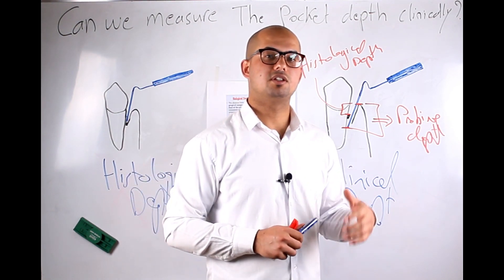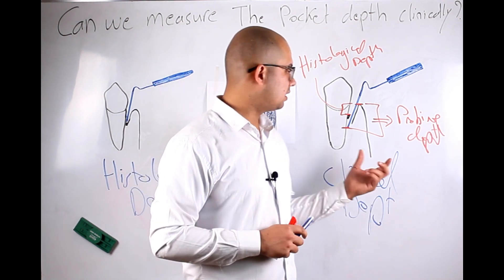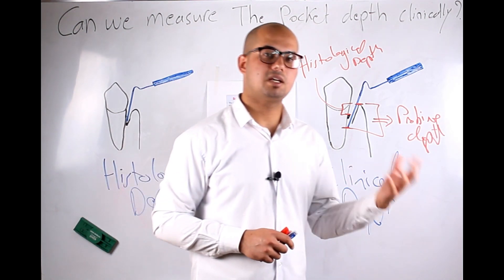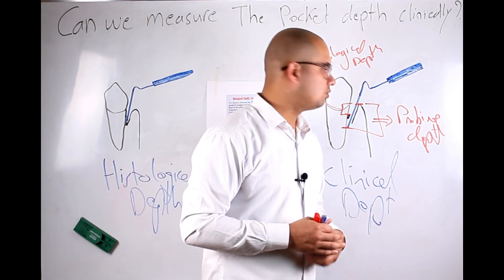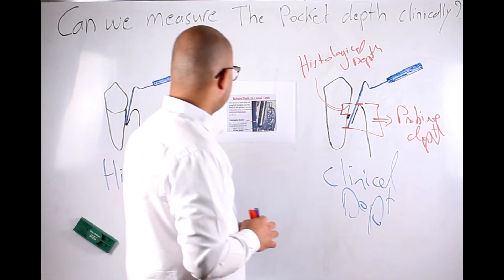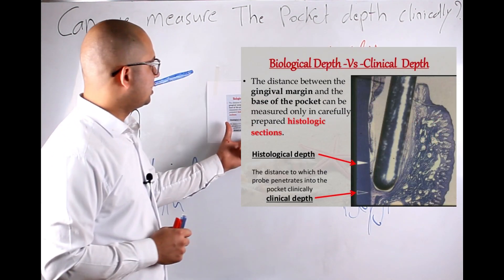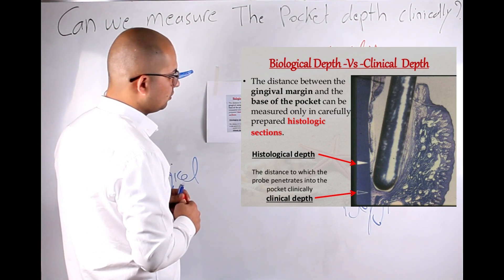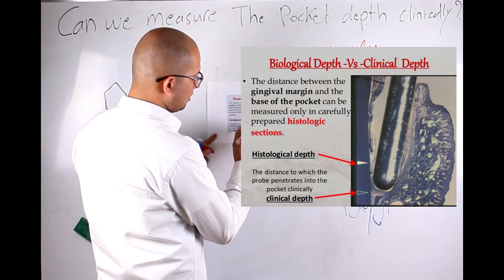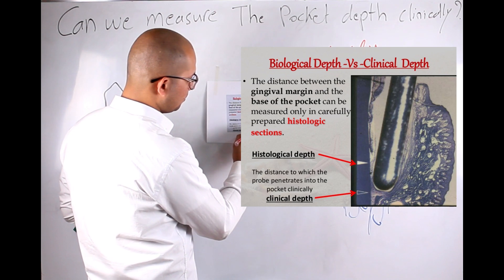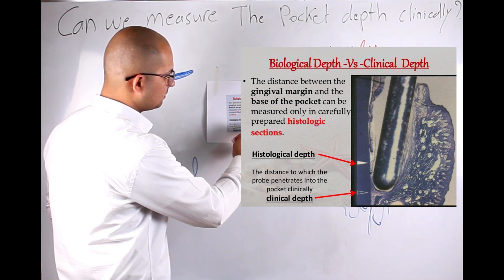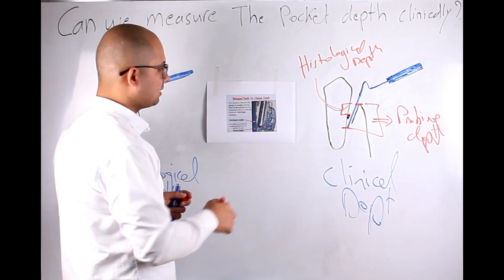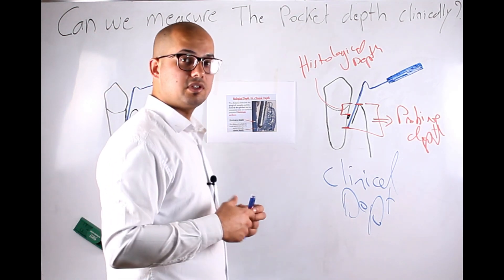Probing depth is always longer than histological depth because we always pass that point, especially in patients with periodontitis where the epithelial attachment and connective tissue attachment are severely damaged, so you easily pass them. If you look closely at this image, you can notice that the periodontal probe is much beyond the base of the pocket, which may give you a false impression.